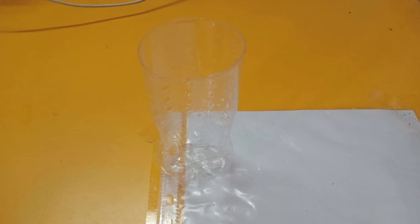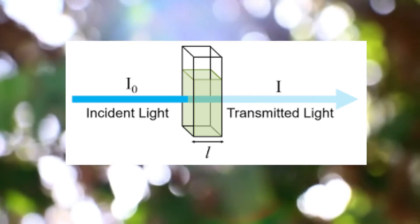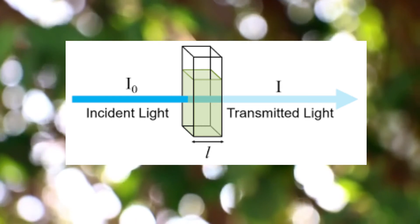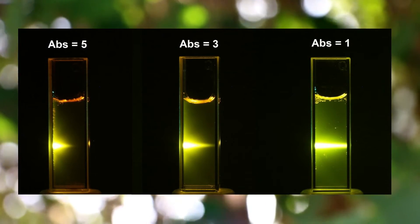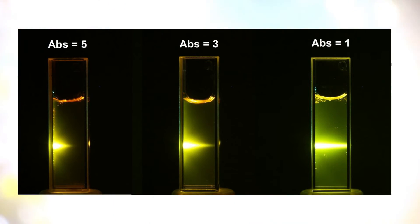Secondly, I learned the importance of container shape. Suppose we have a very dilute solution of food coloring in a cube-shaped container so that the light traveled 1 cm through it — the absorbance is not likely to be very high. On the other hand, suppose we pass the light through a tube 100 cm long containing the same solution; more light would be absorbed because it interacts with more molecules.